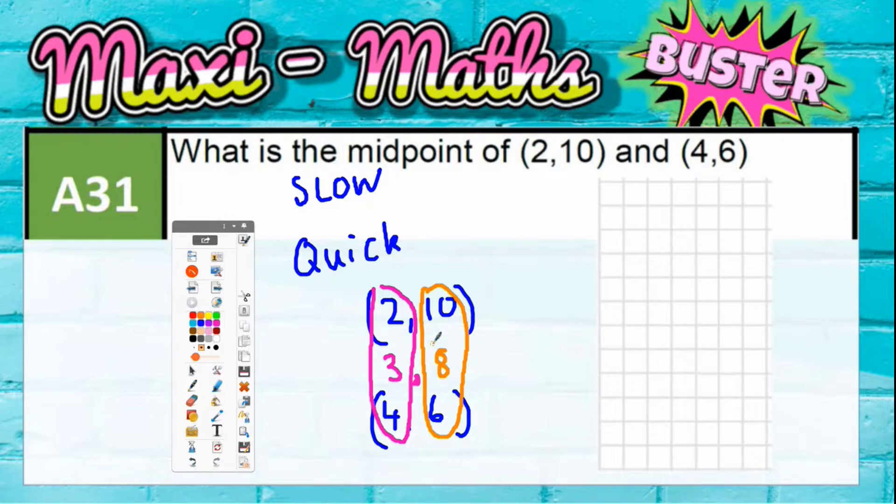If you can't see what's in the middle of the numbers, there is a way of working it out. So you can add the numbers together. So 2 add 4 is 6, and then just half it. 2 add 4 is 6, half of it is 3. That's where 3 comes from. 10 and 6 is 16, and half of it is 8. So that's where the 8 comes from.